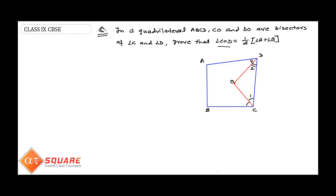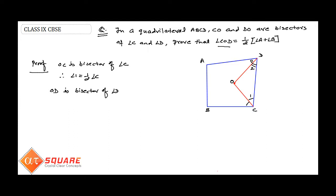Assign angle ODC as angle two. Now let us prove the solution. OC is the bisector of angle C, so angle one is equal to half of angle C. Similarly, OD is the bisector of angle D, so angle two is equal to half of angle D.